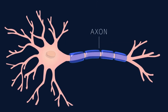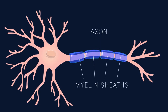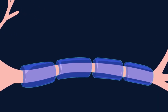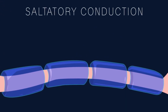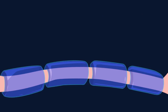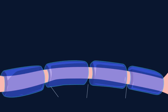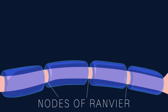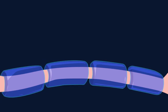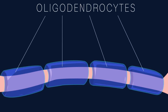Some axons transmit action potentials faster than others. One variable that increases conduction velocity is the presence of myelin sheaths around axons. Myelin speeds up transmission through a process called saltatory conduction, in which the action potential signal appears to jump along the part of the axon covered by the sheath. In the peripheral nervous system, the sheaths are formed from glial cells known as Schwann cells. There are small gaps between Schwann cells called the nodes of Ranvier. The action potential appears to jump from node to node, speeding the transmission. In the central nervous system, the sheaths are made by cells known as oligodendrocytes.